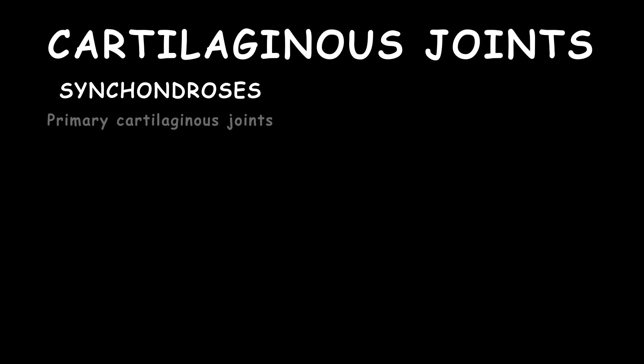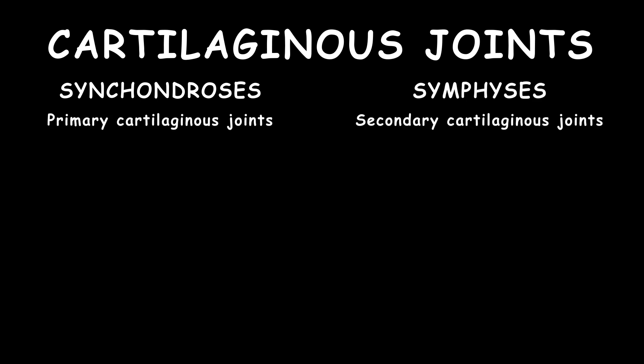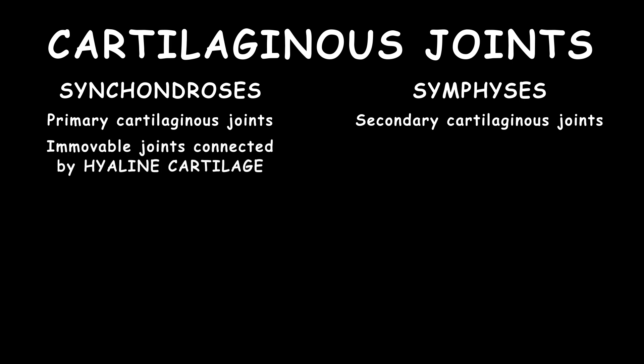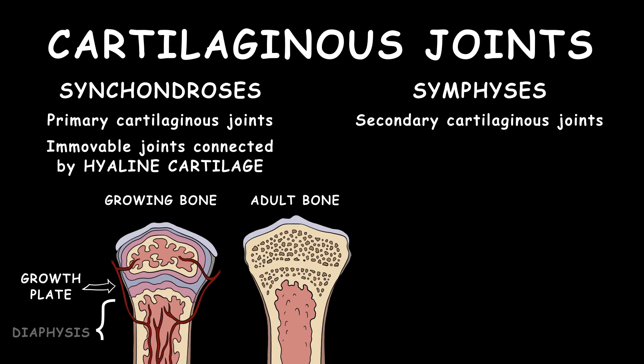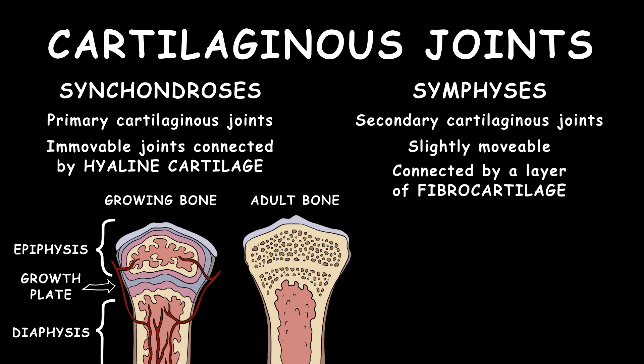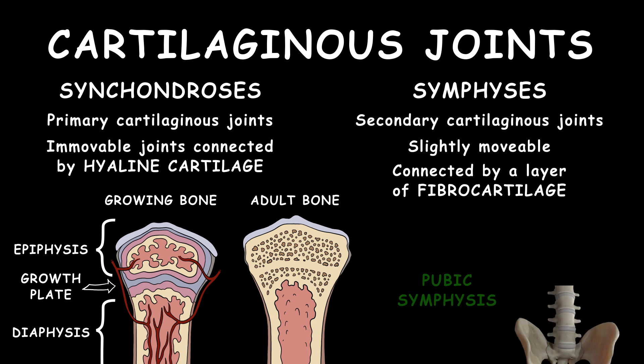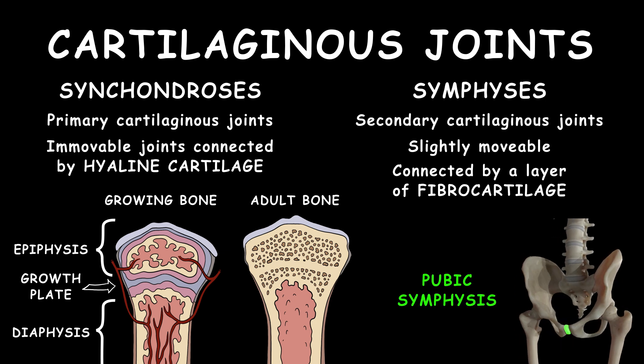There are two main types of cartilaginous joints: synchondroses, or primary cartilaginous joints, and symphyses, or secondary cartilaginous joints. Synchondroses are immovable joints connected by hyaline cartilage, such as the joint between the diaphysis and epiphysis of a growing long bone. Symphysis joints are slightly movable, connected by a layer of fibrocartilage — an example is the pubic symphysis.